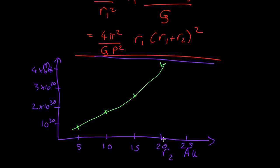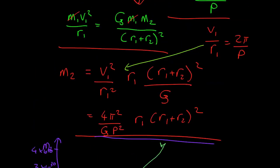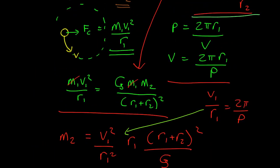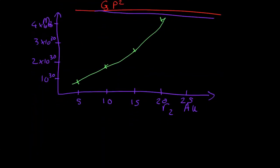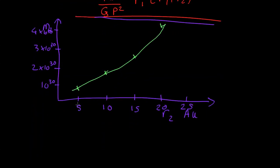Then we can take the other equation, this one here, and plot that. So, if R2 is 5 astronomical units, then that gives us a mass way up here. If it's 10, it's down about there. Once again, just plugging the numbers in. 15, it's something around here. 20, it's going something like that.